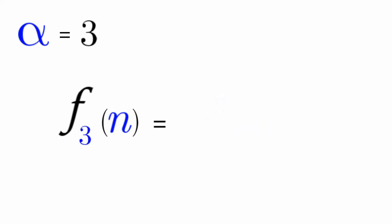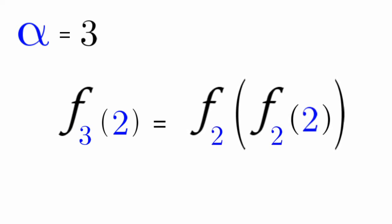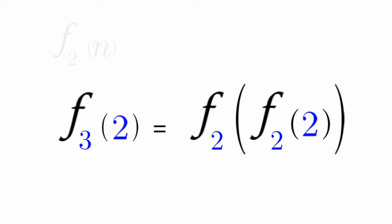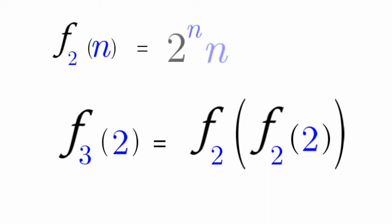But what about f sub 3 of n? That's equal to f sub 2 of n with n repetitions of the f sub 2 function. Let's have f sub 3 of 2. That's equal to f sub 2 of f sub 2 of 2 with 2 repetitions. f sub 2 of n, as we remember earlier, is equal to 2 to the power of n times n.